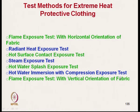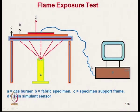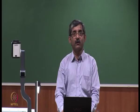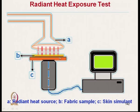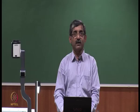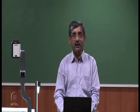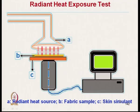In the last class we discussed two methods: the flame exposure test with horizontal orientation and the radiant heat exposure test. In the radiant heat exposure test, the fabric is kept horizontally, the radiant heat source produces heat that is transmitted through the fabric, and on the other side there is a skin simulant.